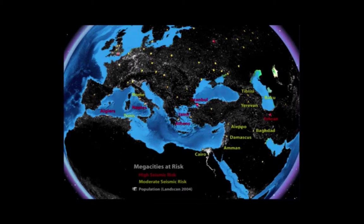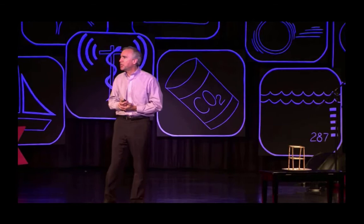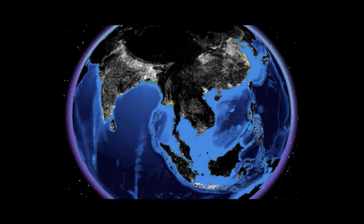Now, what I want to do is swipe that away again, and I simply want to flip the globe over and show you population density on the other side of the globe. And here it is. Look at Java at the bottom of the image — the most densely populated place on Earth. Look at the Ganges Plain in northern India: 400 million people. Look at China.